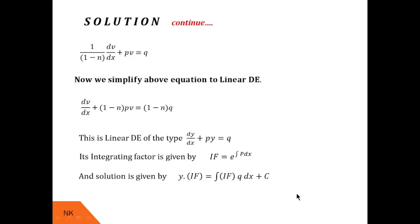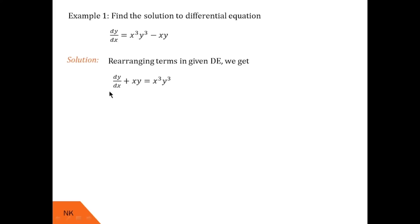Now let us see a real example. Consider the differential equation dy/dx = x³y³ − xy. On the RHS, we identify Qy^n as x³y³, and move the remaining term to the left-hand side. After rearrangement we get dy/dx + xy = x³y³, which matches the Bernoulli form dy/dx + Py = Qy^n. Following Step 1, we divide by y³.